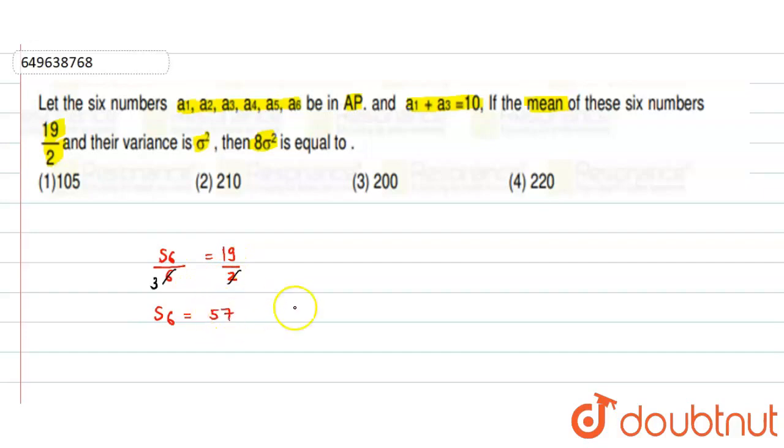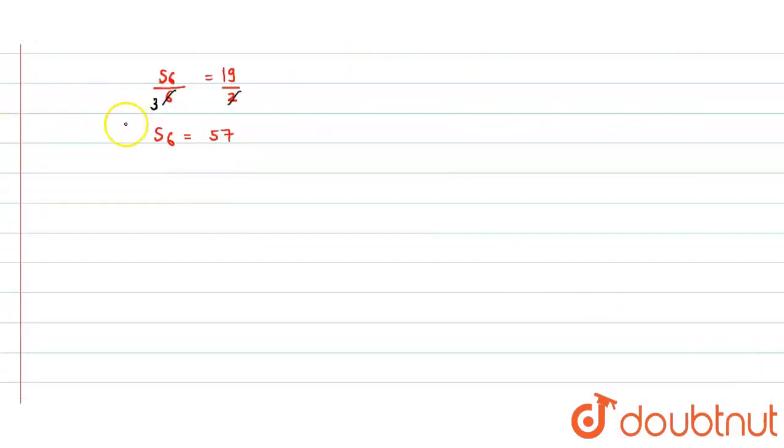Now S6 can be written as n by 2 times 2A plus n minus 1 times D. So 6 by 2 times 2a plus 5d is equal to 57. So 3 times 2a plus 5d equals 57. Therefore 2a plus 5d equals 19. This is equation 1.